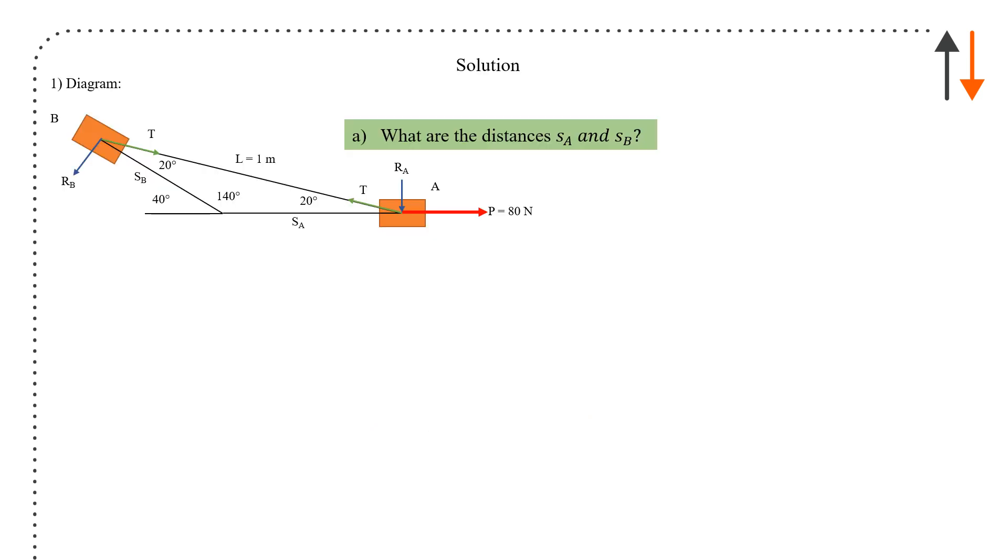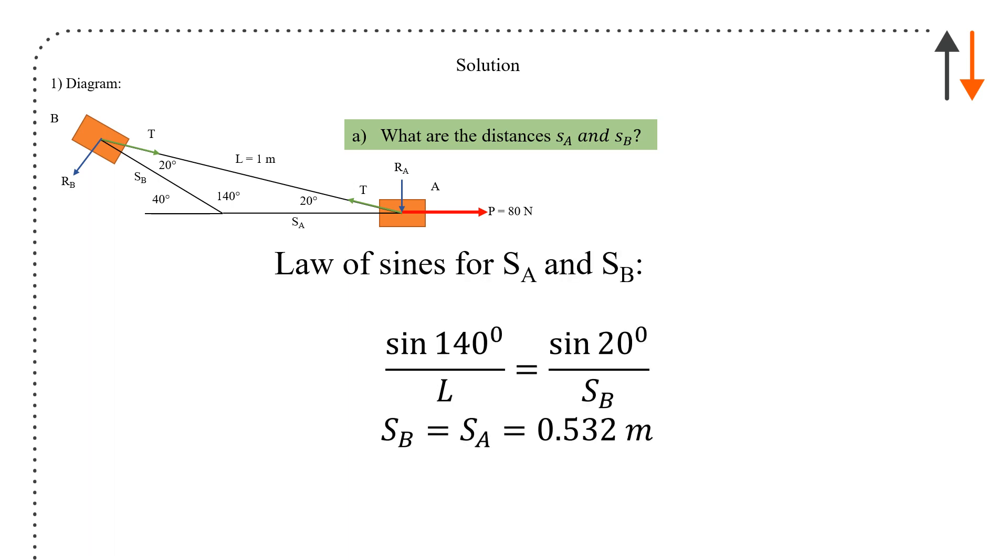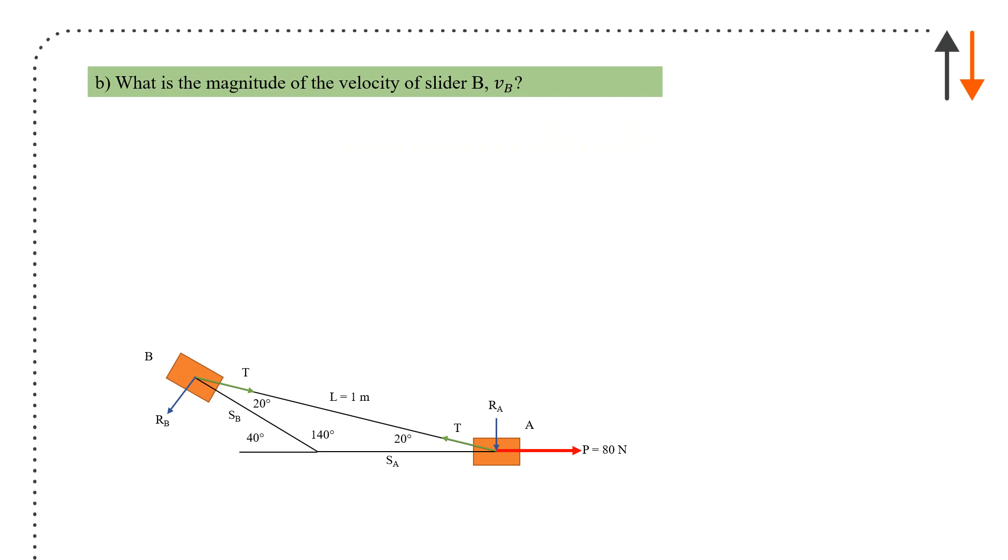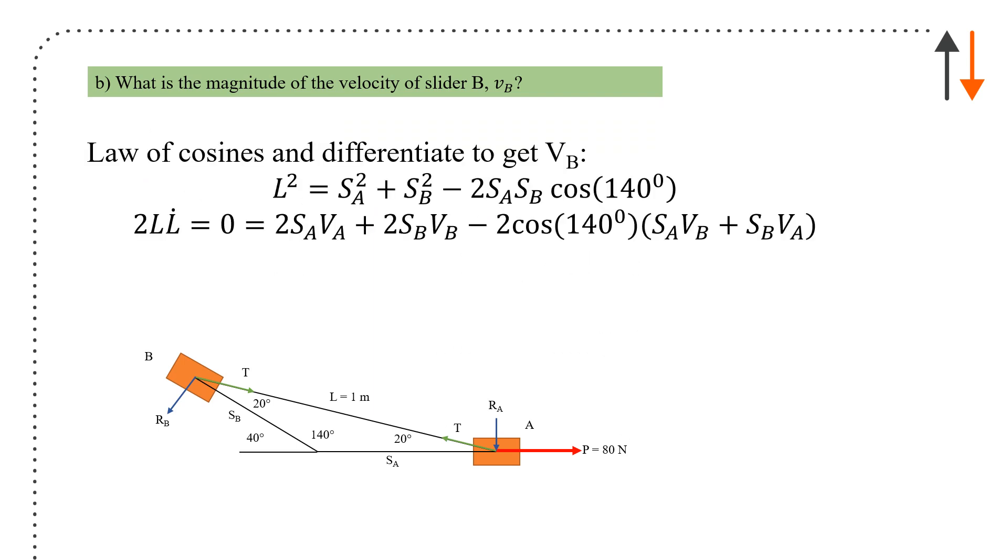First, draw out a diagram. What are the distances s_a and s_b? Using the law of sines, we already know this angle is 140 degrees. We can calculate the remaining terms because we have an isosceles triangle. You get sine of 20 over s_b equals sine of 140 over L, which gives s_b equals 0.532 meters. Differentiate once and set that to zero.